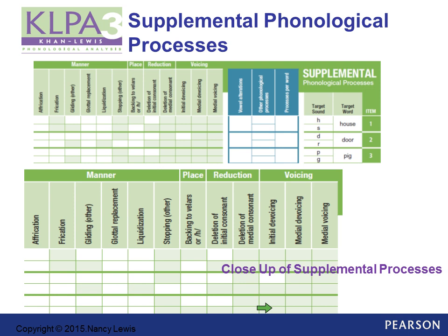Here's an example of the supplemental phonological processes in the record form. You can see they're again grouped by manner, place, reduction, and voicing. Here's a close-up of the supplemental phonological processes. It's good to note that these processes do not get scored for standard scores, but they will provide you considerable qualitative information that can be really useful for treatment planning.